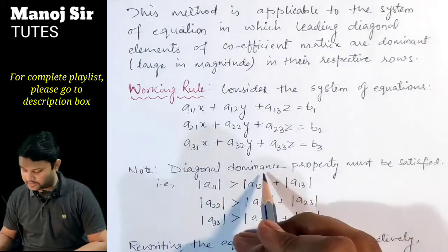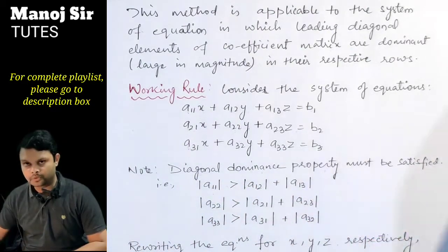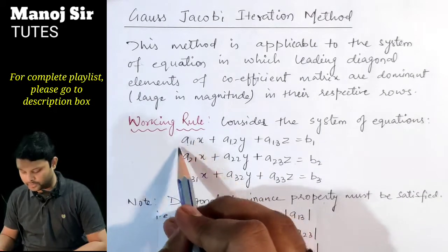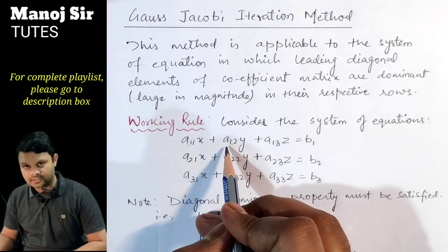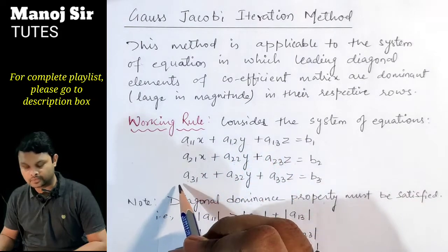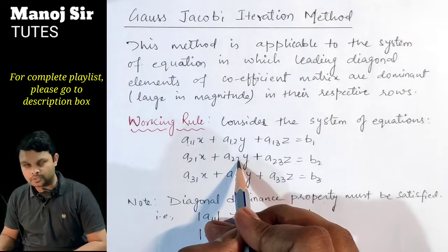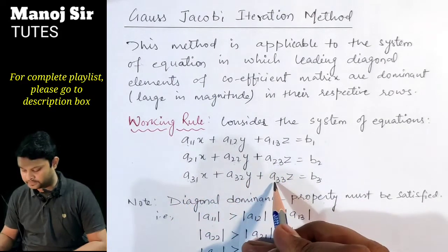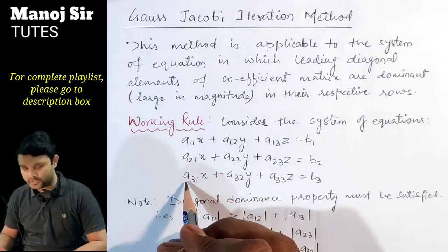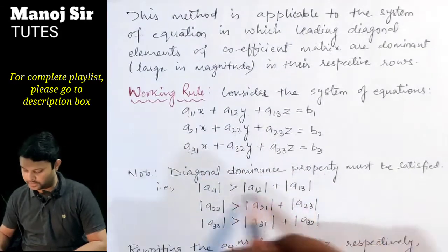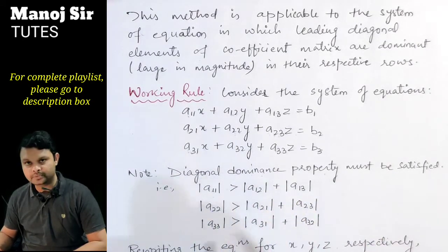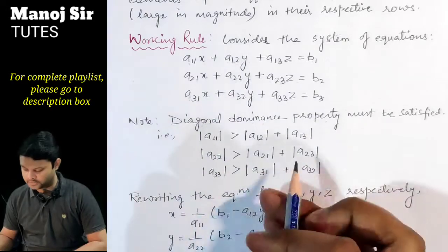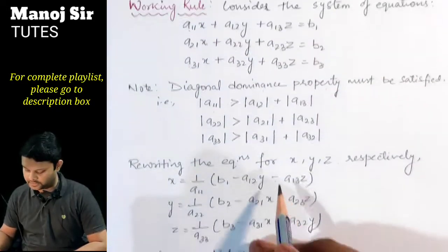The diagonal dominance property must be satisfied to apply the Gauss-Jacobi method. In the first equation, the magnitude of a11 must be greater than the sum of the magnitudes of a12 and a13. In the second equation, the magnitude of a22 must be greater than the sum of magnitudes of a21 and a23. In the third equation, the magnitude of a33 must be greater than the sum of magnitudes of a31 and a32. If this property is satisfied, we can proceed.